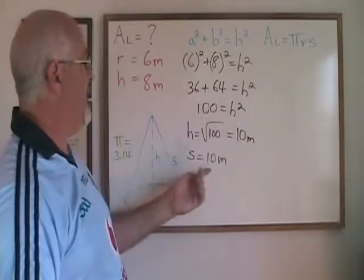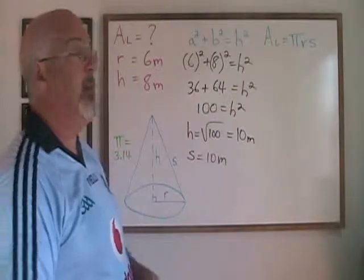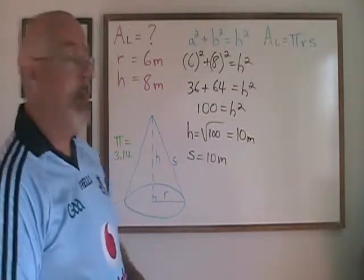Now we can plug the slant height and the radius into the formula for lateral area of a cone and answer our question.